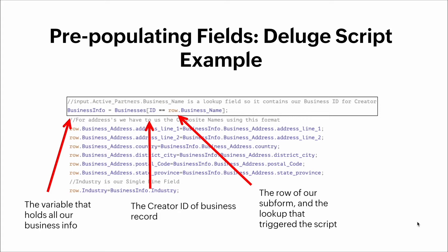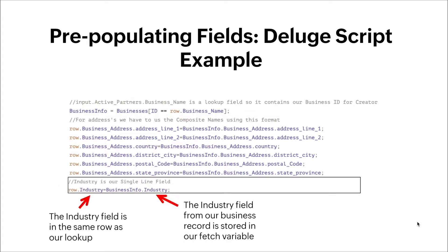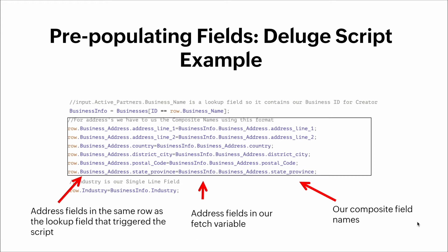Industry is a single-line field in the same row as our lookup, and the industry field value from our business record is stored in our fetch variable. These are the address fields in the same row as the lookup field that triggered the script — we use the address fields from our fetch variable along with composite field names.